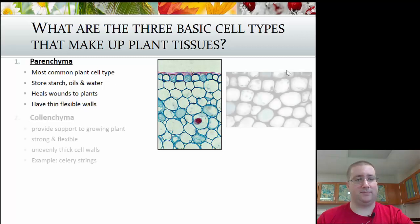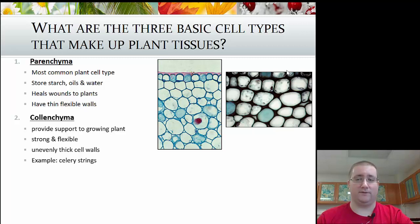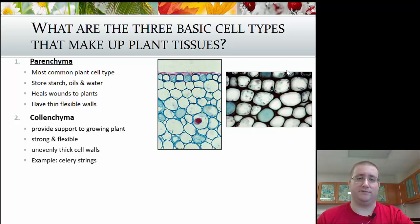The second type is known as collenchyma. These are like collagen, so they're for structural support — they provide support for a growing plant. They're going to be strong and very flexible. They have a thicker cell wall than the parenchyma cells. An example of these are celery strings, which are flexible and bendy but still have some actual support.